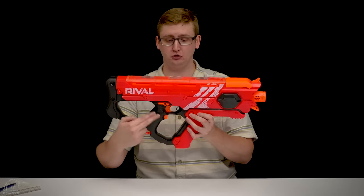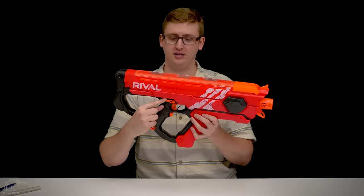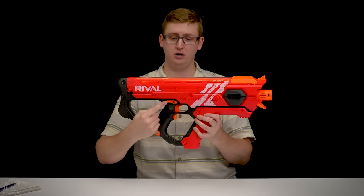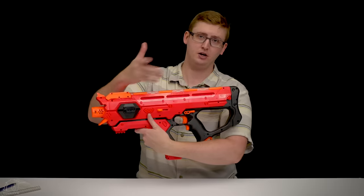Moving back to the fire control group, this blaster has a safety just like other rival blasters. When you pull it down, you can't rev or pull the trigger. And when you push it up, you're able to do both. And it's on the right side and the left side for right or left-handed shooters.